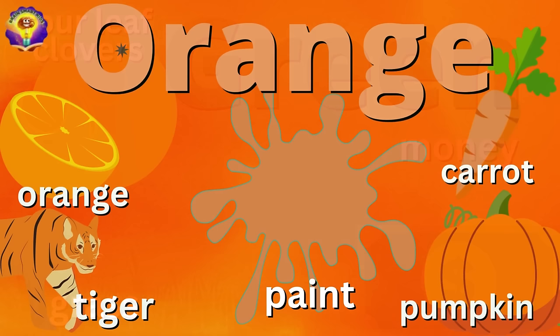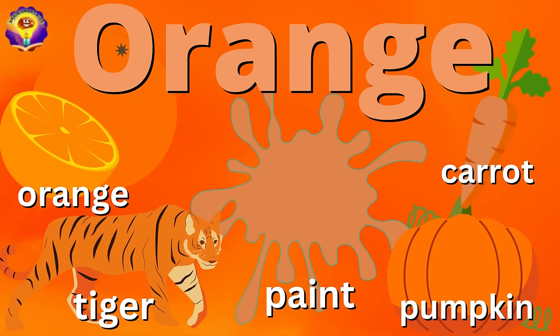Orange. O-R-A-N-G-E. Orange Tiger, Paint, Pumpkin, Carrot. Orange.